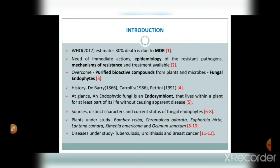Fungal endophytes were first described by scientist D. Barre in 1866 from plants. Their existence was further described by Carrolls in 1986, and Petrini supported the work of D. Barre and Carrolls in 1991. A fungal endophyte is an endosymbiont that lives within a plant for at least part of its life cycle without causing apparent disease. Sources for isolation include medicinal plants, mangroves, seaweeds, etc. Notably, taxol — an important anti-cancerous drug — has been isolated from the fungal endophyte Taxomyces.